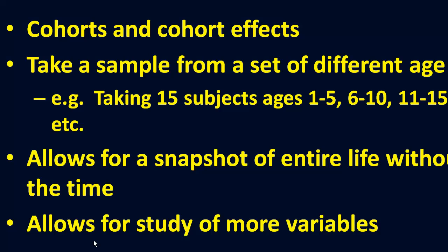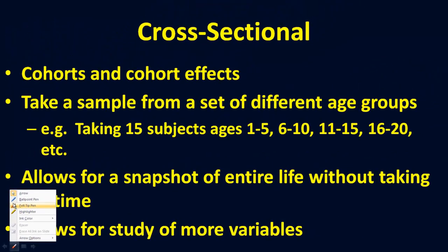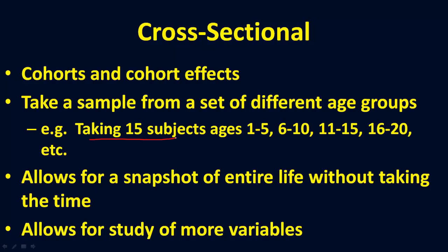Under cross-sectional studies, you're dealing with cohorts — groups of people from different age categories. So you might take 15 subjects aged 1 to 5, another 15 subjects aged 6 to 10, and another 15 subjects aged 11 to 15. The challenge with this approach involves what are called cohort effects — generational experiences that may influence how a generation perceives reality and how they adjust to various environmental stimuli.